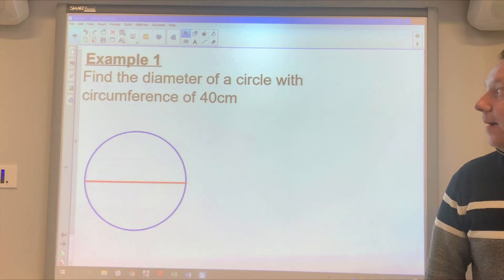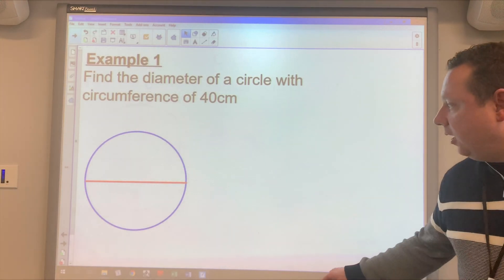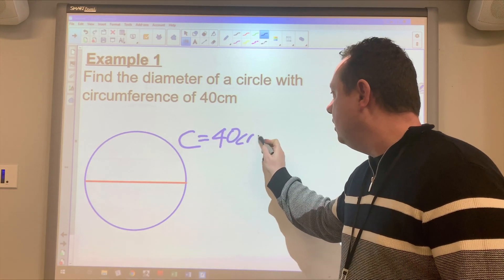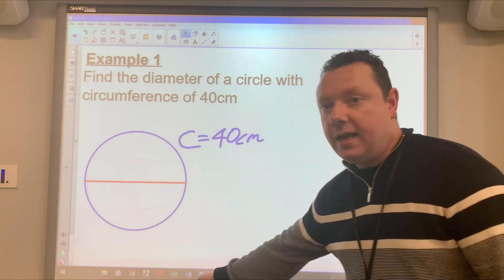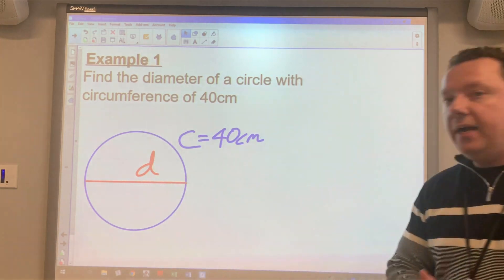Okay, example one says find the diameter of a circle with circumference of 40 centimeters. So our steps are, let's label the circumference C equals 40 centimeters. Let's label our diameter D. There it is there.